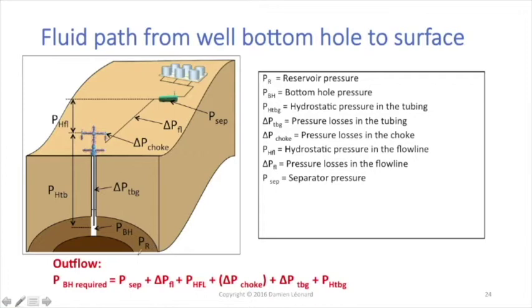We've got PR which is the reservoir pressure, PBH which is the bottom hole flowing pressure, P-HTB which is the hydrostatic pressure in the tubing, and Delta P tubing which is the pressure loss in the tubing.